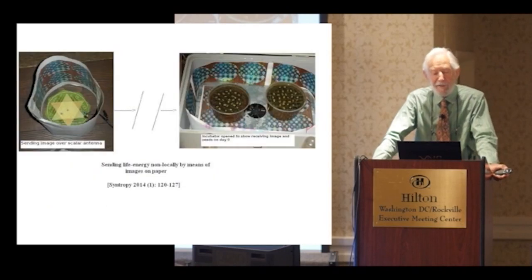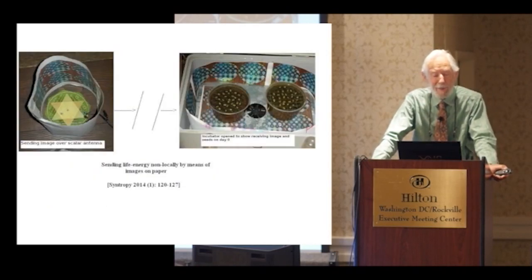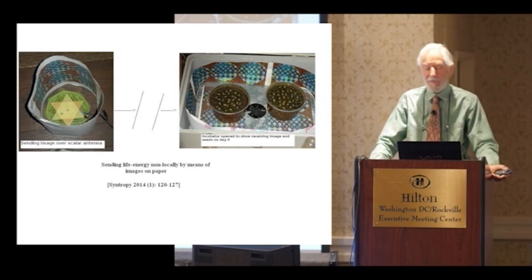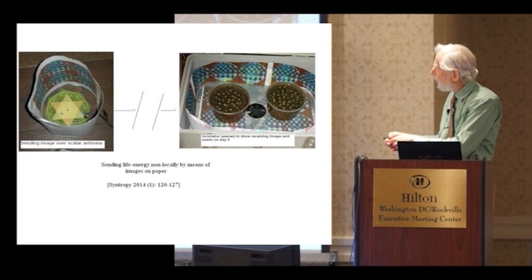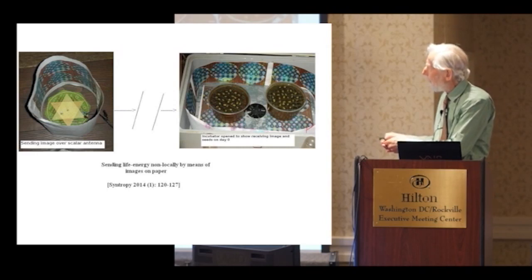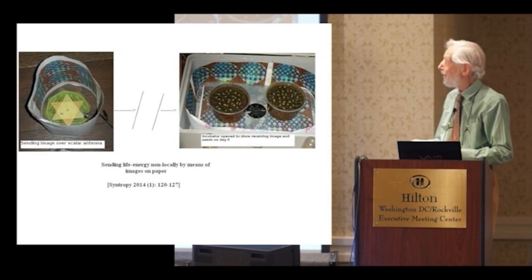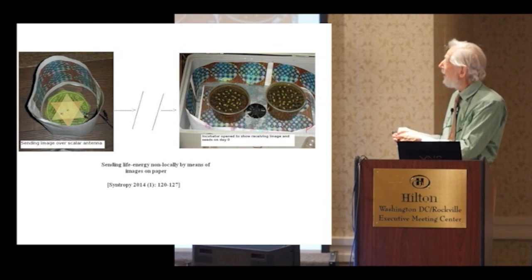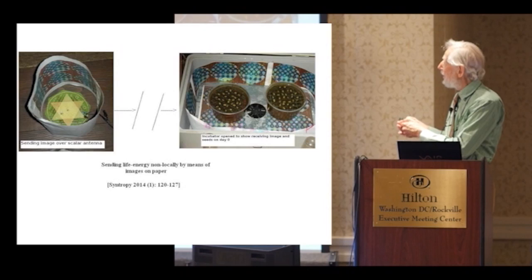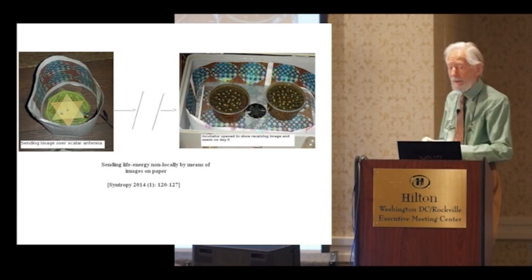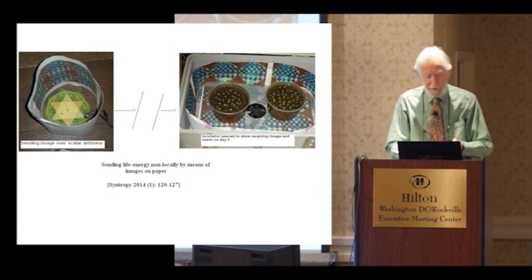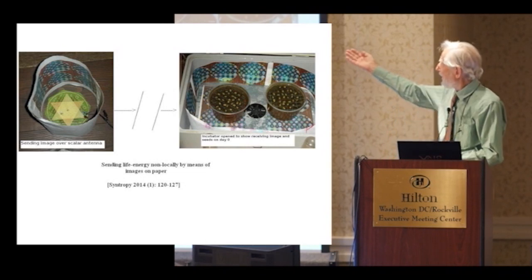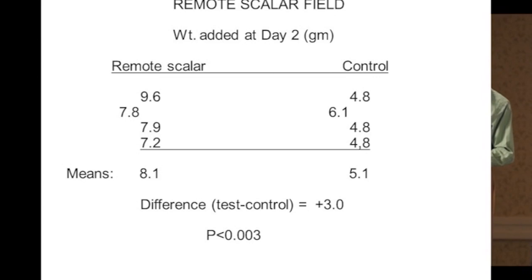This is the other objective measure, much more difficult and time-consuming, is growth of seedlings. In this case, I'm using as a source this non-inductive coil pulsed with 10 kilohertz. It's just any old frequency, and it's surrounded by one copy of the image. The other copy of the image at a distant location is in an incubator where the seedlings are growing. So I've been able to take out these seedlings which are on plastic grids and weigh them at intervals and put them back.